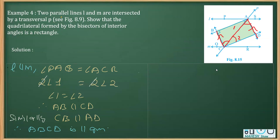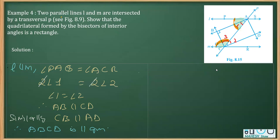Now let's prove one angle is 90 degrees. Let this angle be angle 1, this one angle 2, and this one angle 3. This complete angle and this complete angle are interior angles on the same side of the transversal — that is, co-interior angles — and co-interior angles on the same side of the transversal are supplementary.